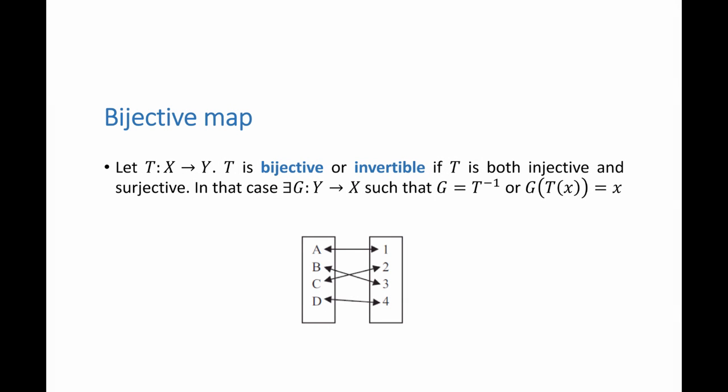The formal definition, if I have a map t from x to y, t is bijective or invertible if t is both injective and surjective. And in that case, I can find a map from the second set to the first set, g from y to x, such that g is the inverse of t.